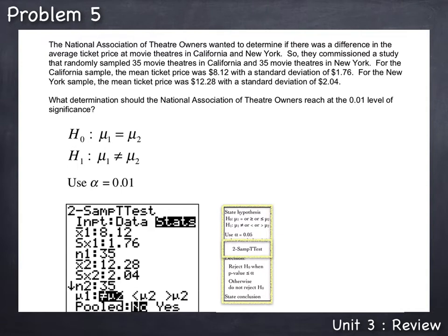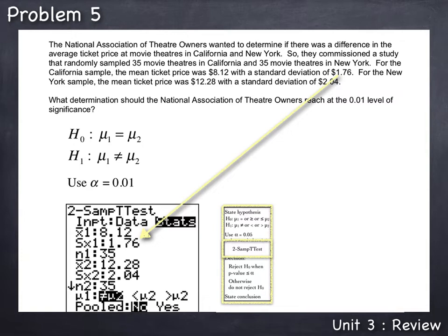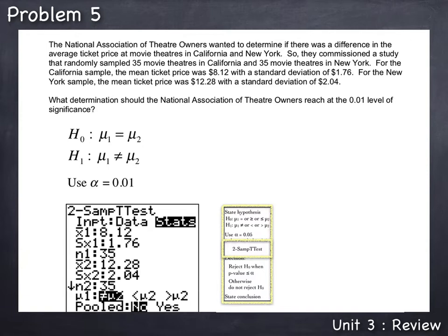California goes first based on our choice, and we need to enter X-bar 1, S-X-1, and N-1. X-bar 1 is the sample mean for the first sample, which is California. The mean ticket price in the California sample was $8.12, so we enter 8.12 for X-bar 1. The standard deviation in California, S-X-1, was $1.76, so we enter 1.76 for S-X-1. N-1 would be the sample size in California, which was 35 movie theaters, so we type in 35 for N-1. Our second sample was taken from New York, so X-bar 2, S-X-2, and N-2 are the sample mean, sample standard deviation, and sample size from New York.